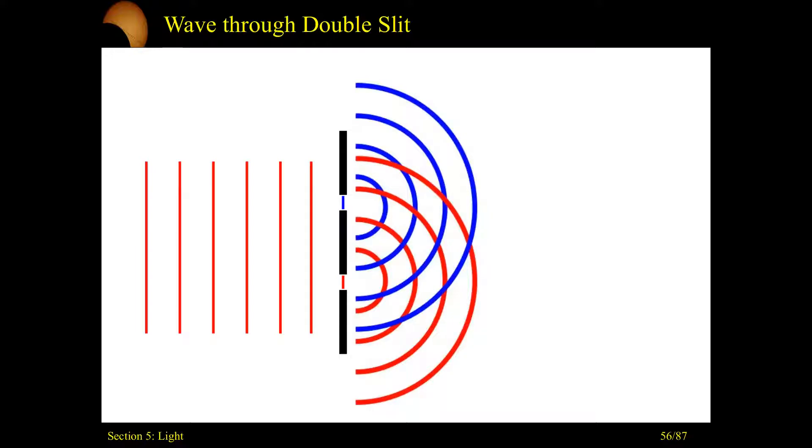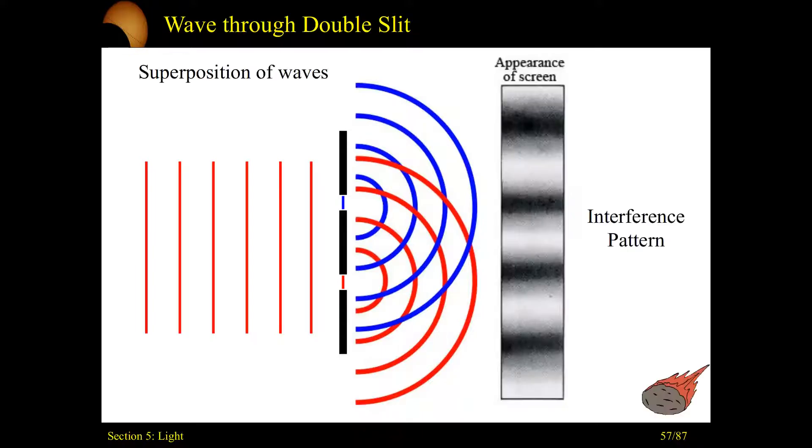So I'm going to color code this and superimpose both of them on top of each other. And this is what we see, this weird complex picture. I'm using blue for the top gap, red for the bottom gap. And you'll have these intersection points, these two different waves now stacking on top of each other. And this creates what we call an interference pattern.